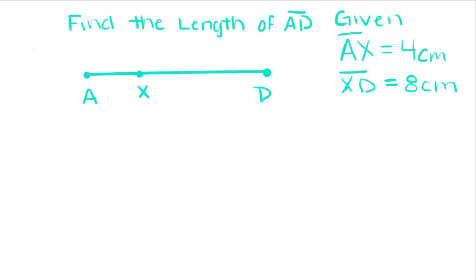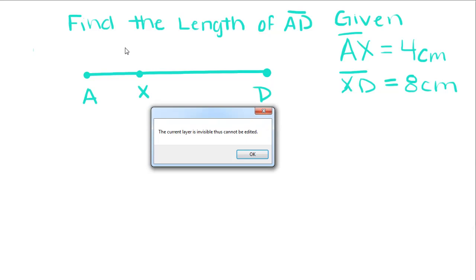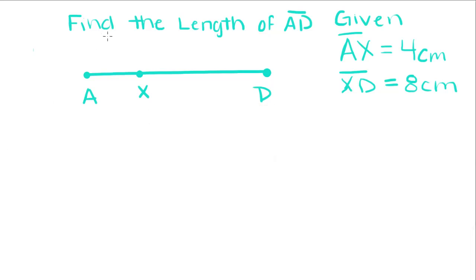Let's say you're given this information. And they want you to find the length of line segment AD, given that AX is equal to 4 centimeters, and XD is equal to 8 centimeters. So we're just going to label this right here, 4 and 8. And since this is what we're trying to find, we can add AX plus XD to find out what AD equals.